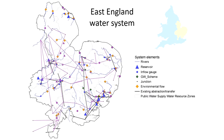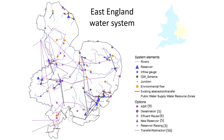Water resource systems have many interdependencies because they serve the needs of multiple sectors like public water supply, agriculture, energy generation, and the environment. Perhaps the biggest challenge when trying to improve water services is selecting from amongst almost unlimited combinations of potential future options.